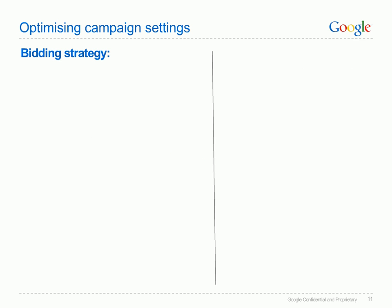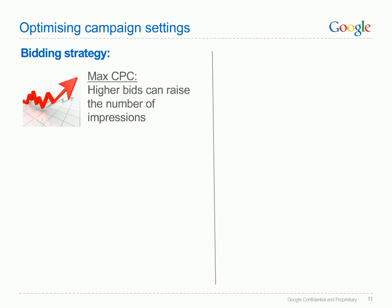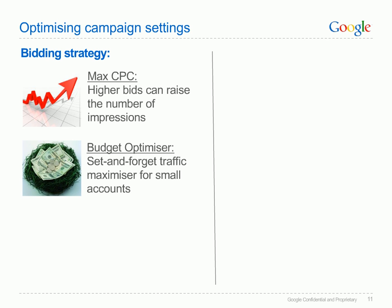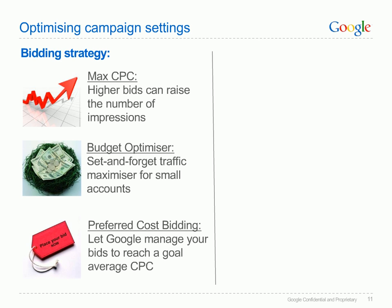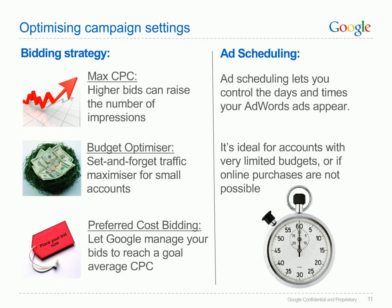There are three important options to remember when optimising bidding strategy. Firstly, increasing max CPC can increase the number of impressions an ad receives and makes the ad more competitive in the auction. For small accounts, use the budget optimiser to automate your bids. Consider using preferred cost bidding, whereby our system manages your bids to achieve an average CPC target that you set. And lastly, you can maximise your ROI by analysing the peak conversion times for your account and scheduling your ads to only appear at the times when conversions are more likely.